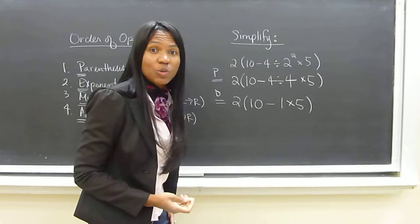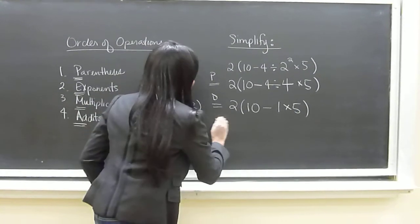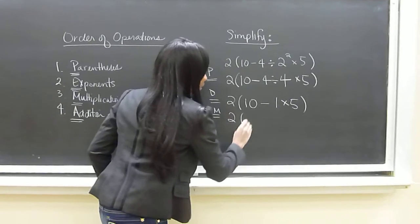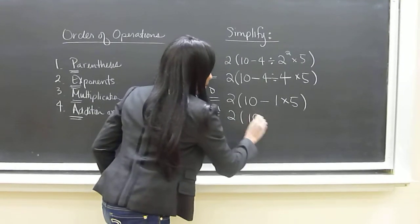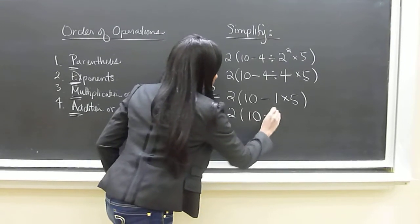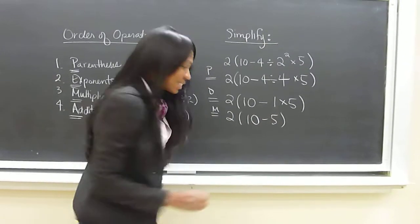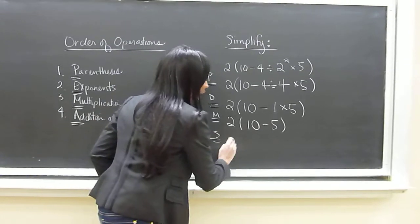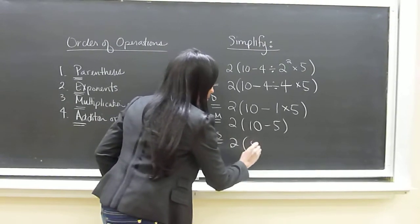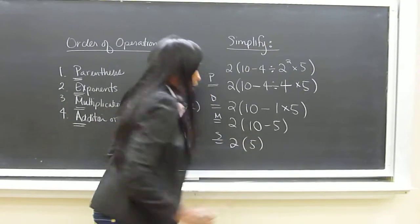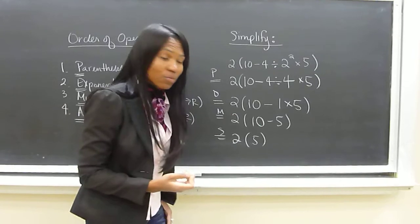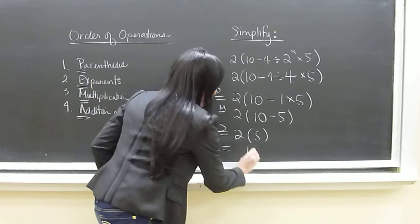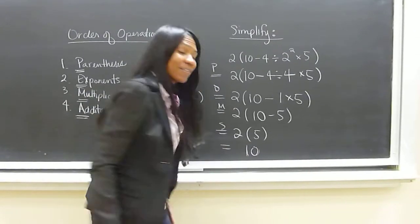Next, we do the multiplication. Inside the parentheses, we then do the subtraction, and lastly, we multiply our result, which would give us 10.